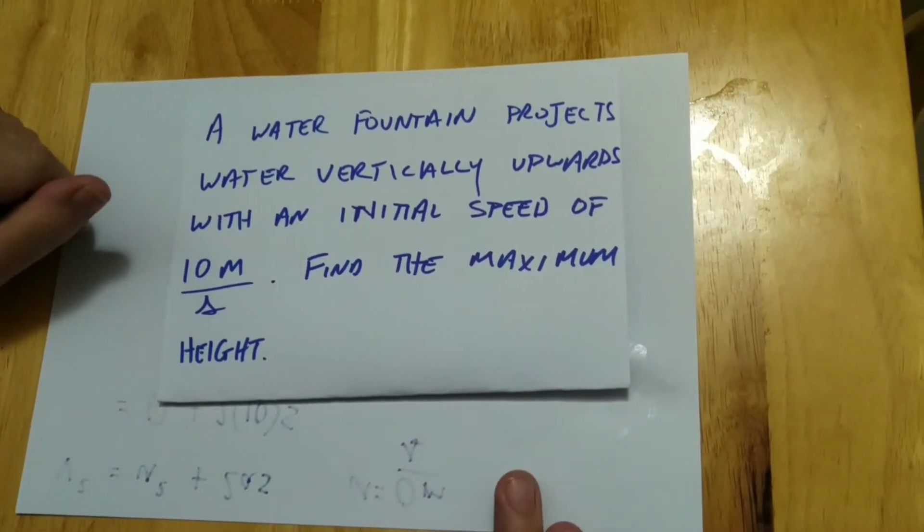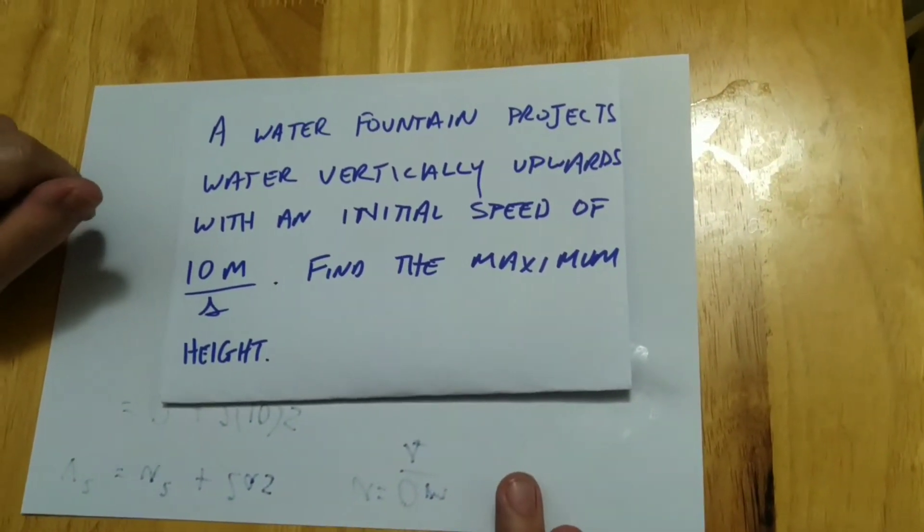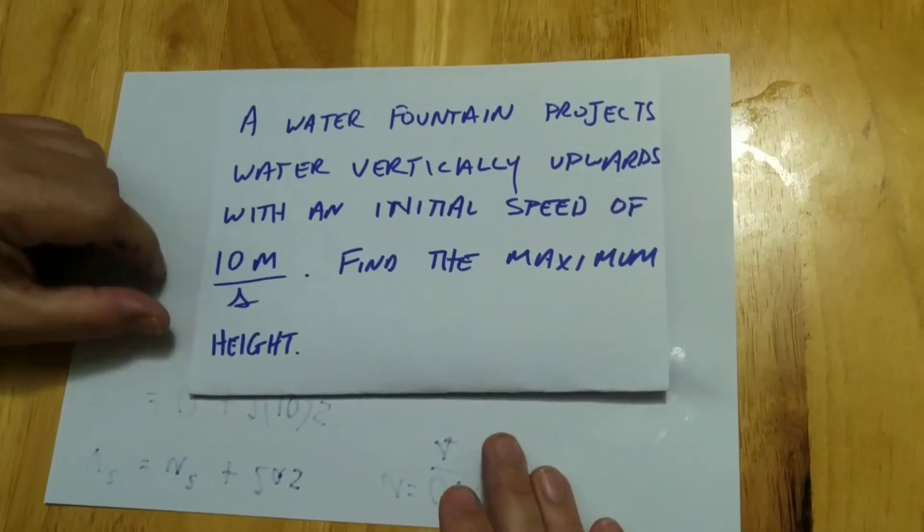Okay, so we're gonna look at this one. A water fountain projects water vertically upwards with an initial speed of 10 meters per second.